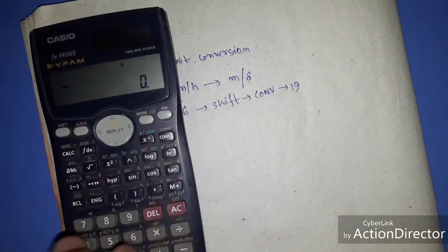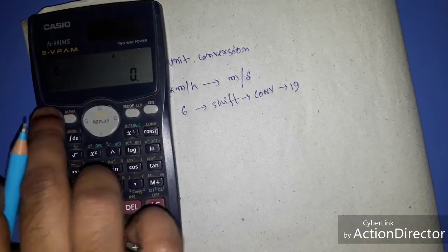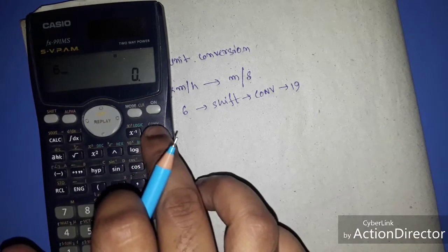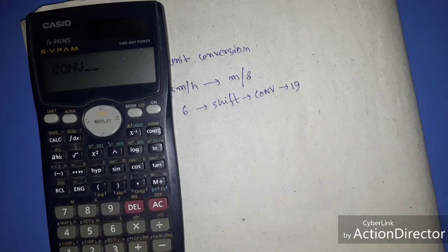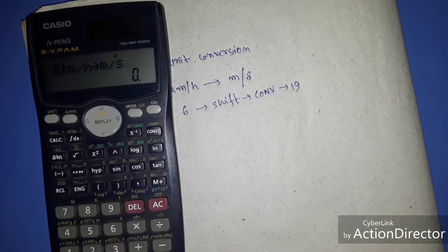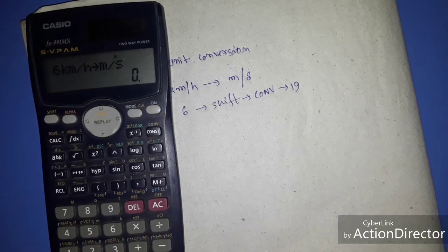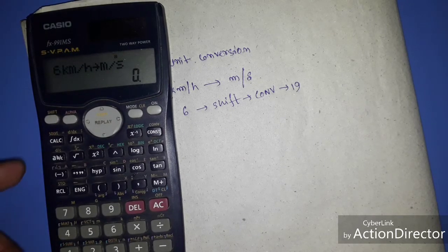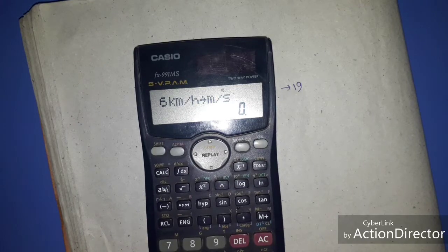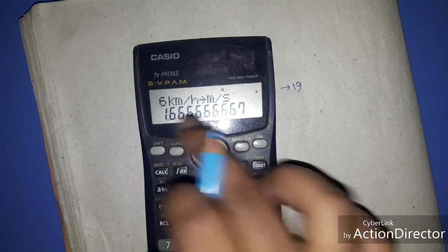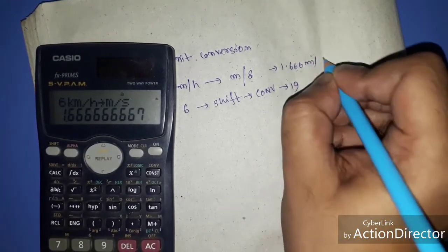So now try with calculator. We want to convert 6 kilometer per hour to meter per second. And press equal button. That gives 1.666 meter per second.